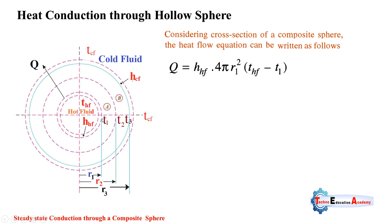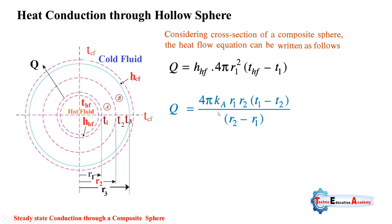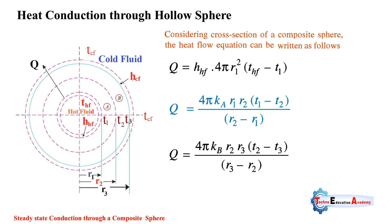Between layers A and B, conduction takes place following Fourier's law, where Q equals minus k·A·dT/dx. We have already derived the heat transfer equation through spherical coordinates. So Q equals 4π·k_a·r1·r2·(t1 minus t2) divided by (r2 minus r1) for layer A. For layer B, the thickness is r3 minus r2, and for layer A the thickness is r2 minus r1, as seen in the schematic diagram.